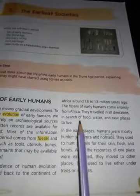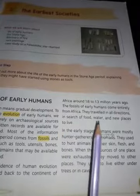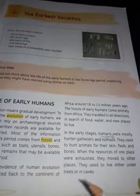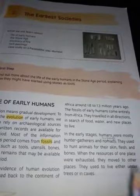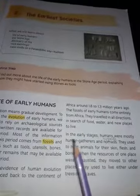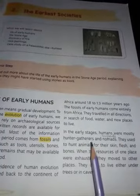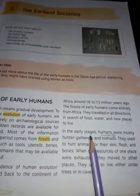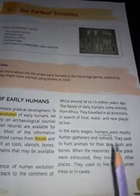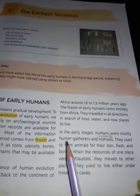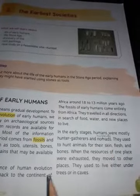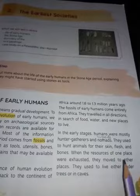They traveled in all directions in search of food — people ne har jagah travel kiya, khane ke liye, pani ke liye, and new places to live. Jagah jagah ghoomte rahe rehne ke liye, ki kahin unhen apna source of living mil jaye. In the early stages, humans were mostly hunter-gatherers — pehle woh apes ki tarah dikhte the, dhire dhire developments aane shuru hue. Woh jyada tar hunter-gatherers hote the, shikari hote the, and nomads — joh log ek jagah se doosri jagah jaate hain, joh migrants hote hain.